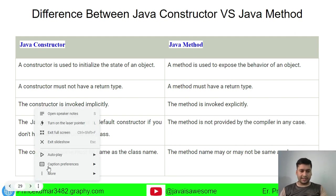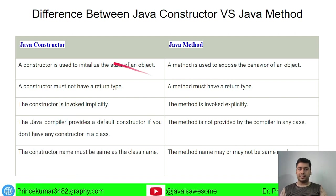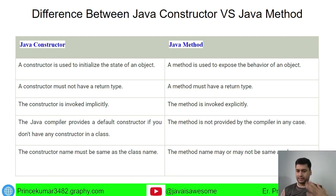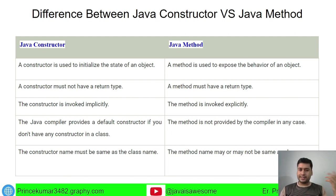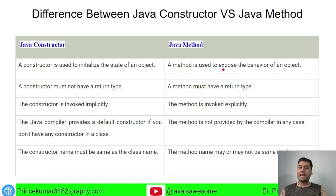Let's first look at what is the constructor versus methods. A constructor is used to initialize the state of an object — meaning whatever instance variables we have created at the class level will be initialized inside the constructor.